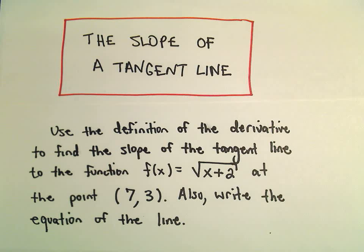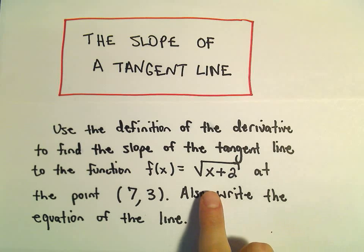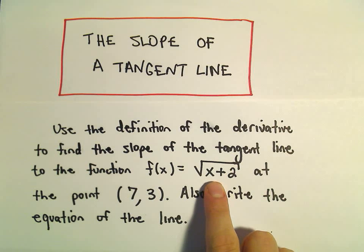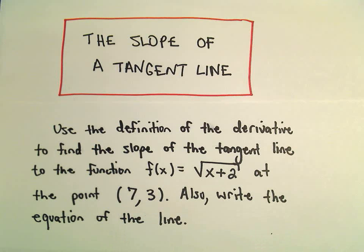In this video, we're going to use the definition of the derivative to find the slope of a tangent line for the function square root of x plus 2. We're going to do this at the point (7, 3), and we're going to find the equation of the tangent line as well.